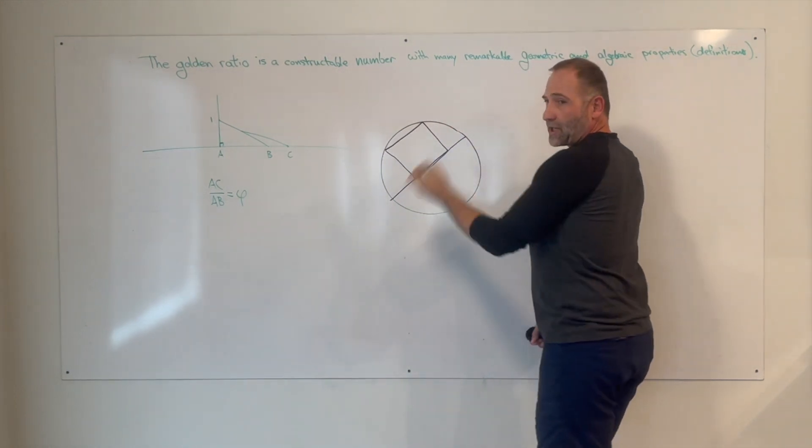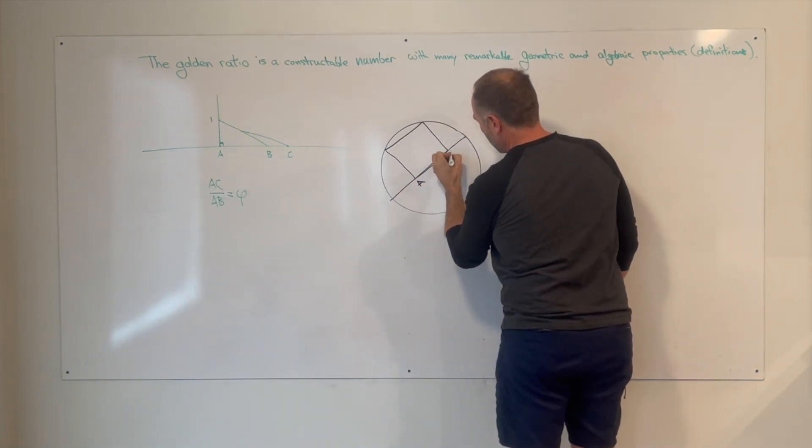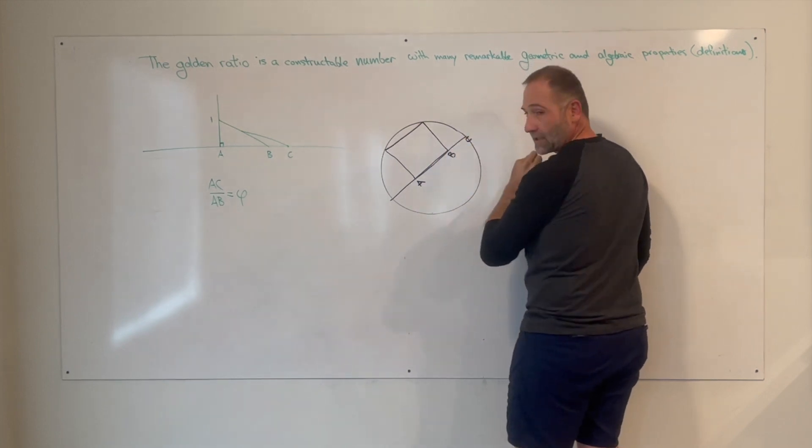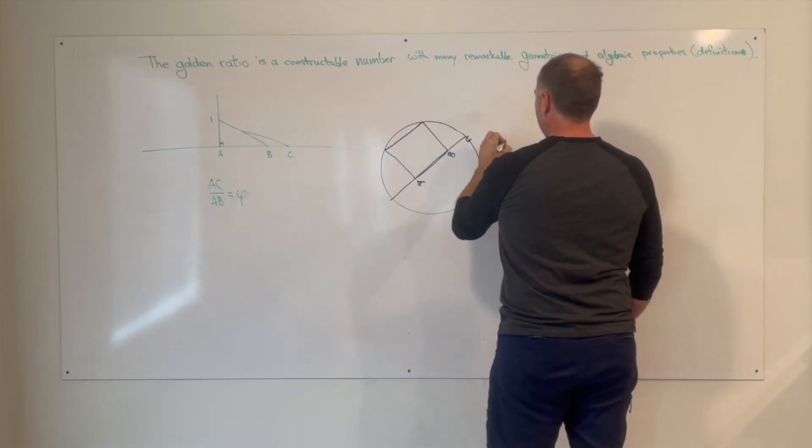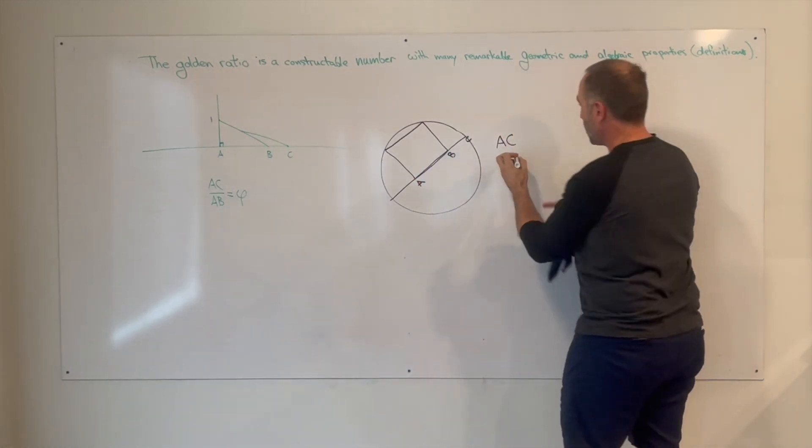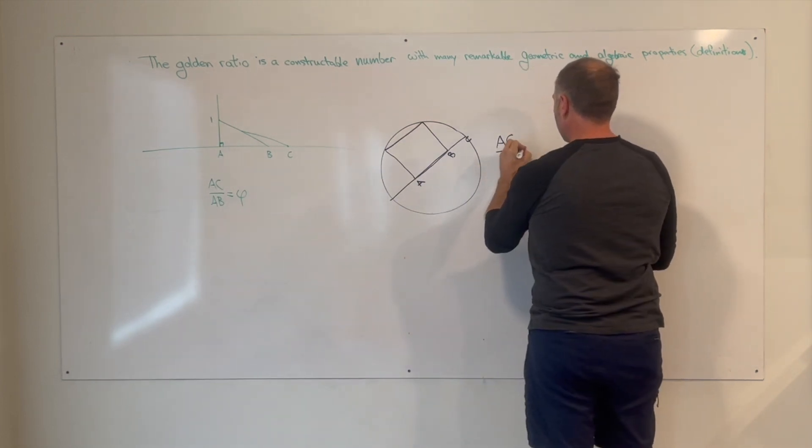Now, it doesn't matter which direction you pick, but if I start from this side of the square and label A and B and extend A and B until it hits the circle and call this point C, then we have the exact same situation again. The length from A to C divided by the length from A to B equals the golden ratio.